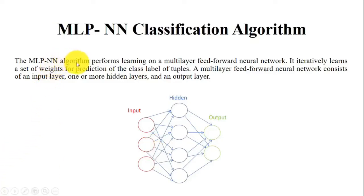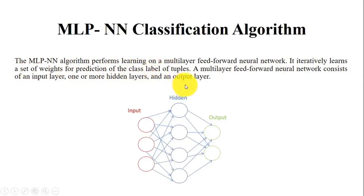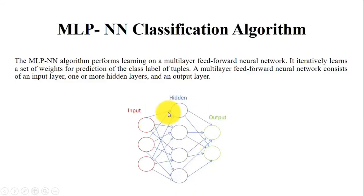The MLP neural network algorithm performs learning on a multi-layer feedforward neural network. It iteratively learns a set of weights for the prediction of the class label of tuples. It takes a set of input layers and based on those inputs it applies some kind of activation function. Those input layers are fed simultaneously towards the hidden layer.